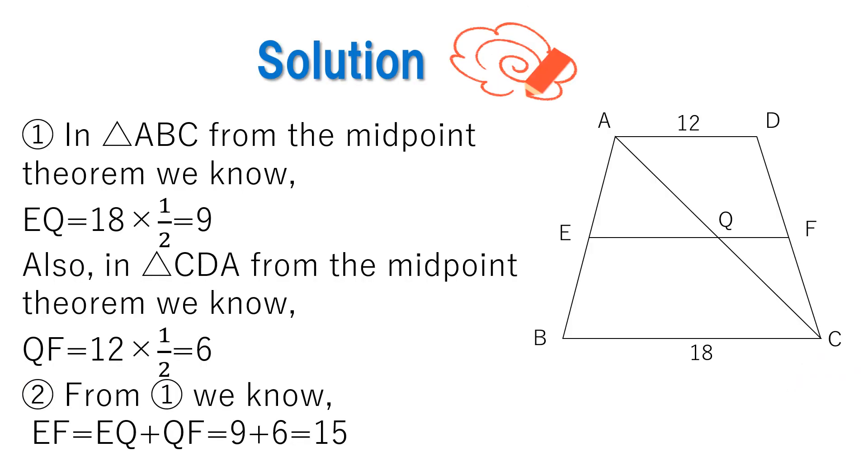Now let's go over our answers. For number one, in triangle ABC from the midpoint theorem we know EQ equals 18 times one-half equals 9. Also, in triangle CDA from the midpoint theorem we know QF equals 12 times one-half which equals 6.